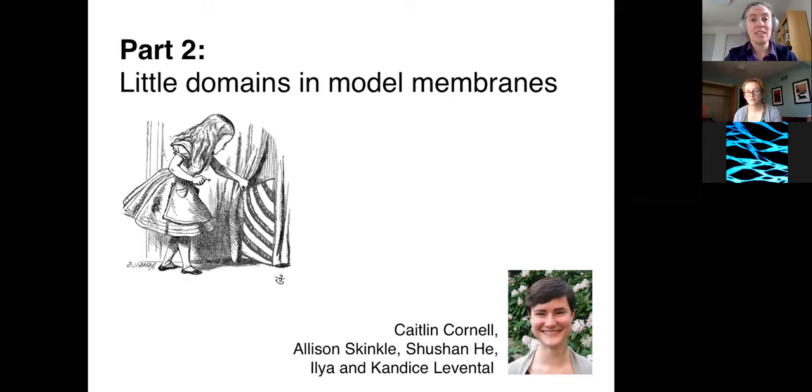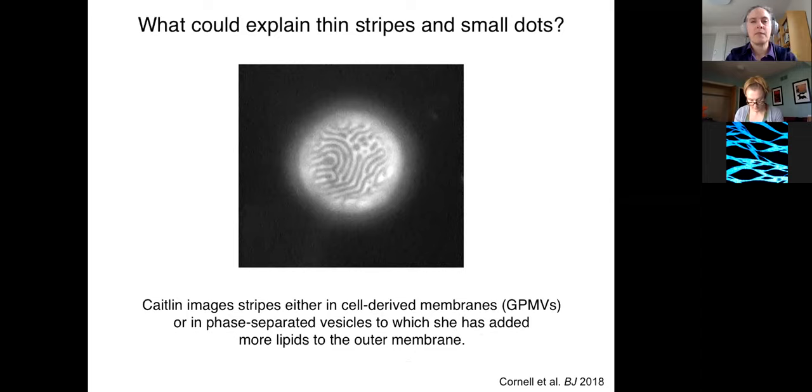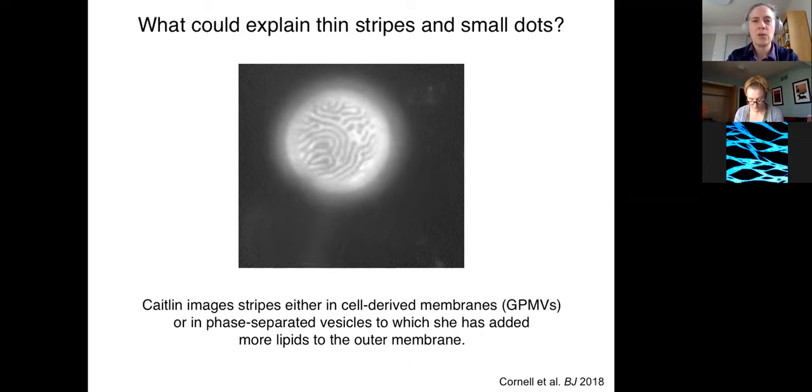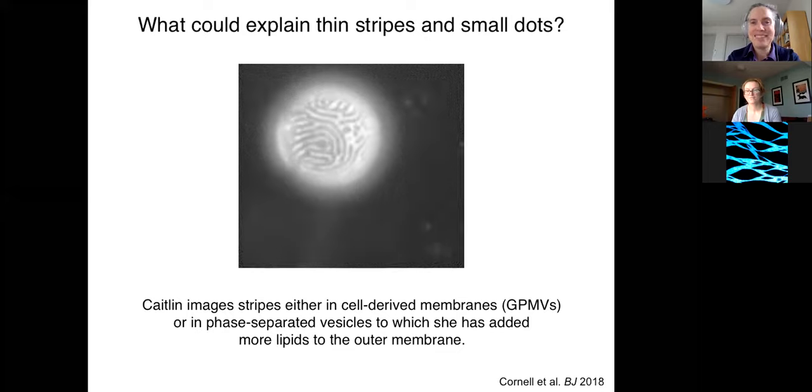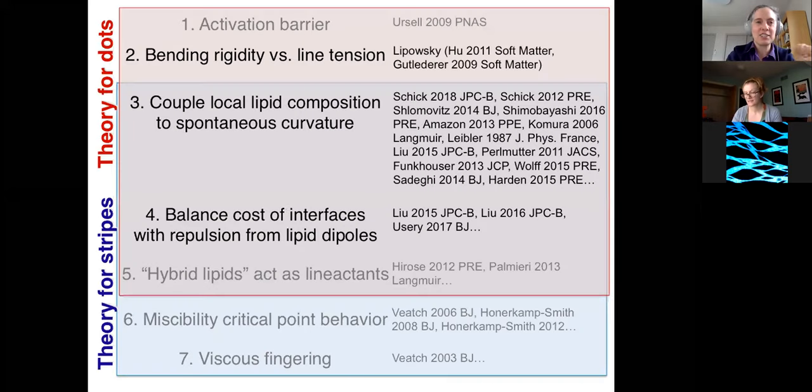Part two of this talk is to think about small domains in model membranes. I made the point previously that one way that you could get domains from being as big as they might possibly be is to have an activation energy for coalescence. But that doesn't really explain how you might get stripes. So very beautiful and somewhat confusing. How might you get stripes? To think about how you might get stripes, the thing to do is to look in the literature. But there is really, for me, an avalanche of literature in the field.